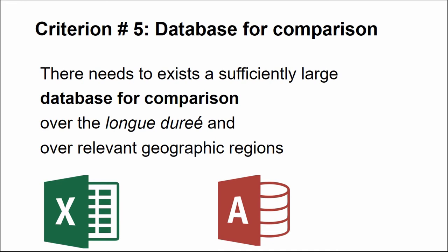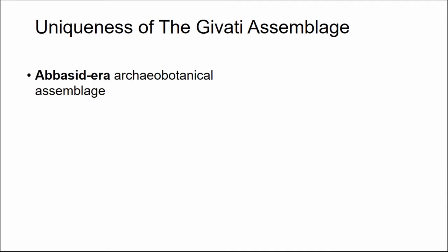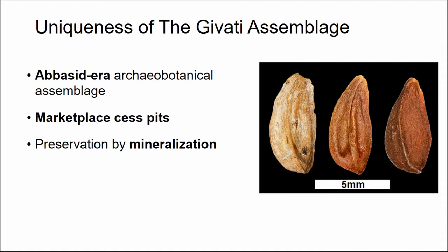To apply this methodology, I'm using the Givati assemblage as a test case. It used to be a parking lot in the old city of Jerusalem and is now an archaeological site. The site is unique in several ways: it's an Abbasid-era archeobotanical assemblage, which is very rare in the Levant; it's archaeologically identified as a marketplace; and its main features are cesspits and refuse pits, which is also extremely rare in our region.